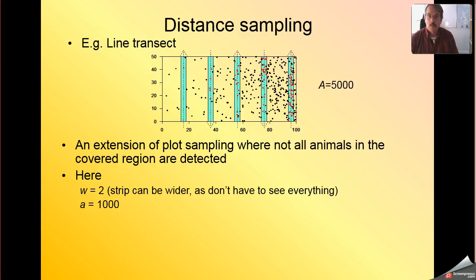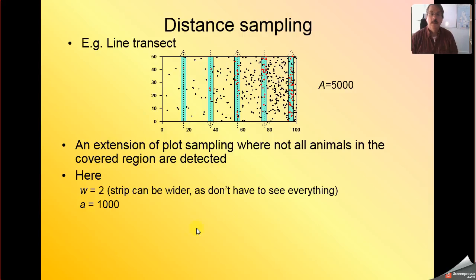Because our strips are wider, our effort is extended — we have a bigger study area over which we detect animals. Little a is now 1,000 instead of 500. And so little a over cap A, instead of being one tenth, is now going to be one fifth.